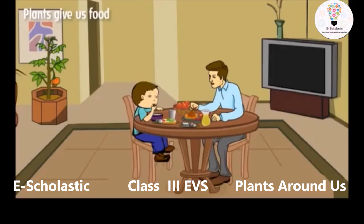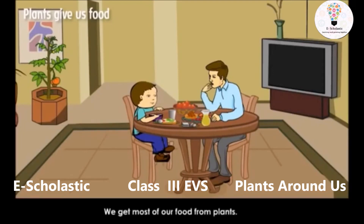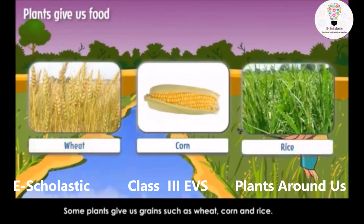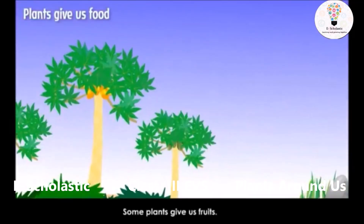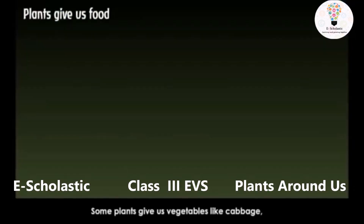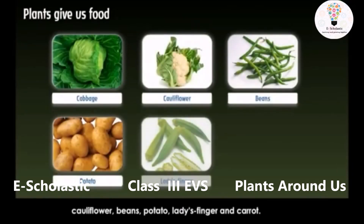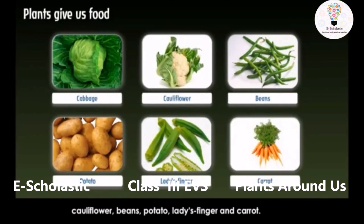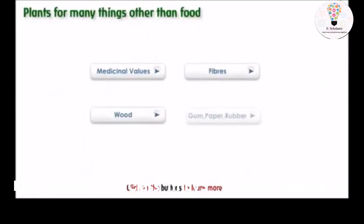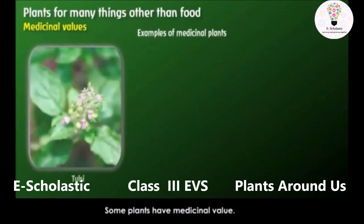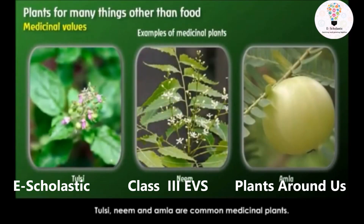Plants give us food. We get most of our food from plants. Some plants give us grains such as wheat, corn, and rice. Some plants give us fruits. Some plants give us vegetables like cabbage, cauliflower, beans, potato, lady's finger, and carrot. Plants also have medicinal value — tulsi, neem, and amla are common medicinal plants.